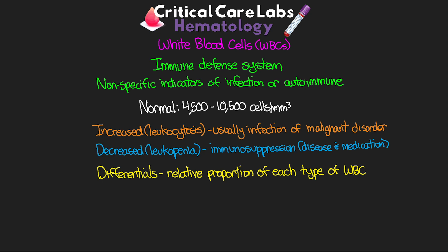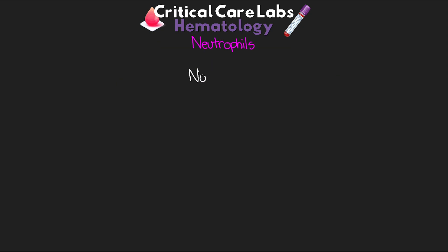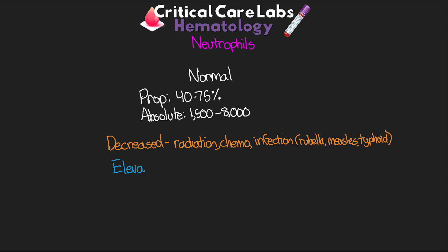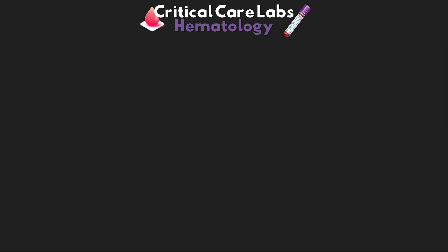The first differential we're going to talk about is our neutrophils. Normal proportional value is 40 to 75%, with an absolute value of 1,500 to 8,000. We can see decreased neutrophils in cases of radiation, chemo, certain infections such as rubella, measles, lupus, and typhoid. And we can see elevated levels in acute infections.